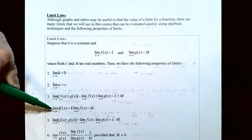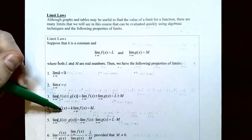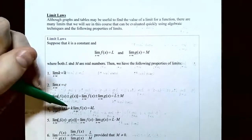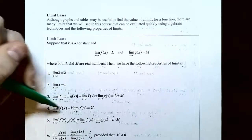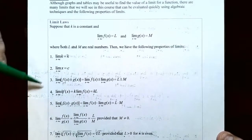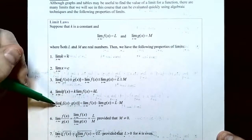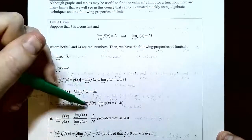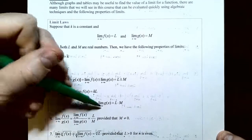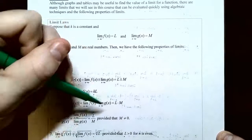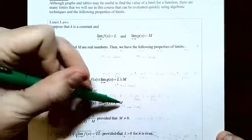Property four: the limit as x approaches c of a constant times a function — like 3 times f(x) — the constant can be taken outside the limit. So you get k times L. Property five is similar to three, but for products: the limit as x approaches c of f(x) times g(x) equals the limit of each function separately multiplied together, giving L times M. Property six is for quotients: the limit as x approaches c of f(x) divided by g(x) equals L divided by M, provided the denominator M is not zero.